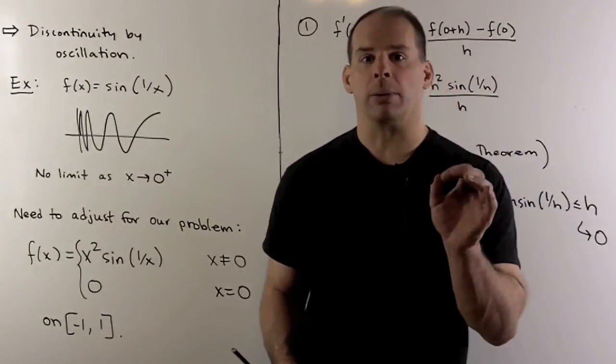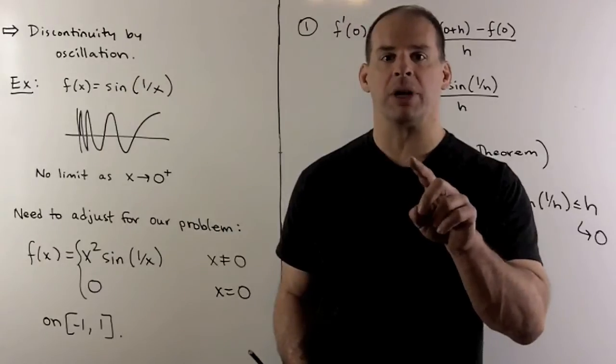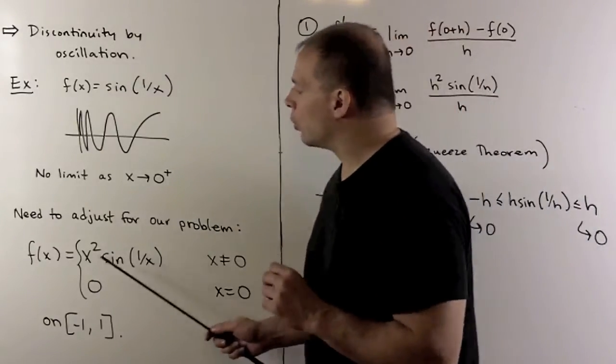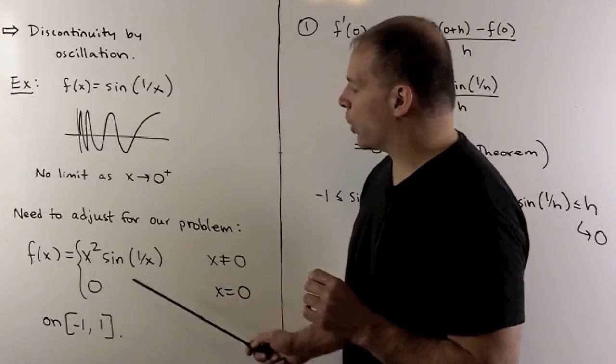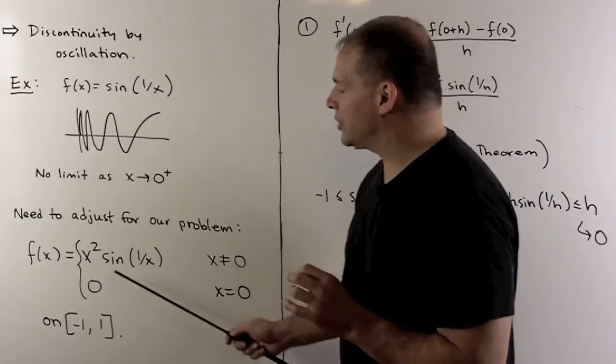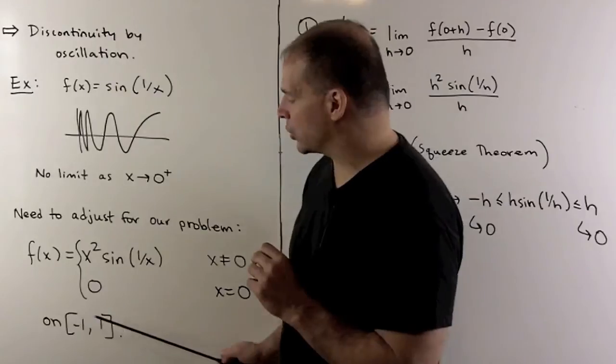To make this useful for our problem, we'll have to adjust just so that we can get the differentiable property on the interval that we're interested in. So we'll use f(x) equal to x² sin(1/x) when x is non-zero, then 0 when x is 0, and I'll just confine things to the interval [-1, 1].